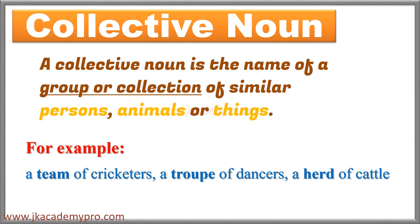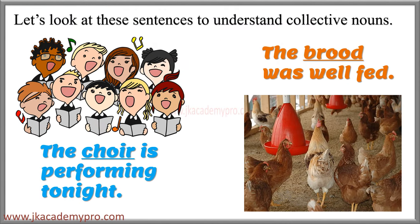Collective noun. A collective noun is a name of a group or collection of similar persons, animals or things. For example: a team of cricketers, a troop of dancers, a herd of cattle. A group of cricketers is called a team, a group of dancers is called a troop, and a group of cattle is called a herd. 'The choir is performing tonight.' Here, the word choir is used for a group of singers, so choir is a collective noun. 'The brood was well fed.' Here, the word brood represents a group of hens, so brood is a collective noun.